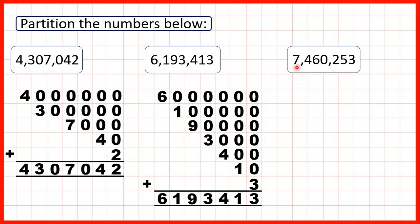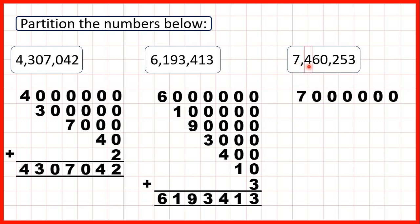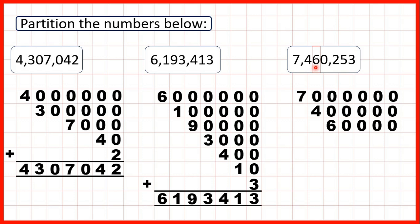Now we have 7,460,253. The 7 is in our millions so that's 7 with 6 zeros on the end because we have 6 digits after the 7. The 4 is in our hundred thousands so that's 400,000. The 6 stands for 60,000 because it's in our ten thousands place value.